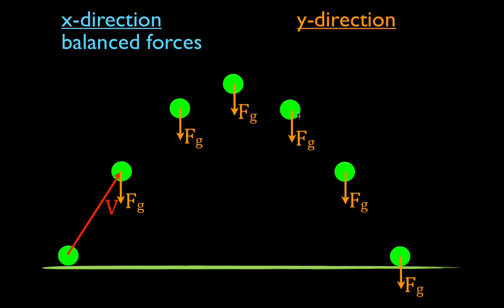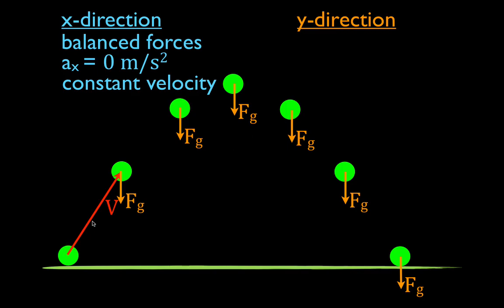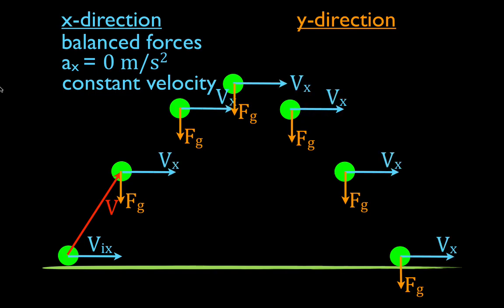So the forces are balanced — the sum of the forces is zero. If the forces are balanced, the acceleration is zero. In the x direction, the object is not accelerating, which means it has a constant velocity. If we know the initial velocity in the x direction — we might call that vix, velocity initial x — then we know the velocity in the x direction at every other point in time. I drew these vectors, vx, with the same length and the same magnitude, because the velocity in the x direction doesn't change.